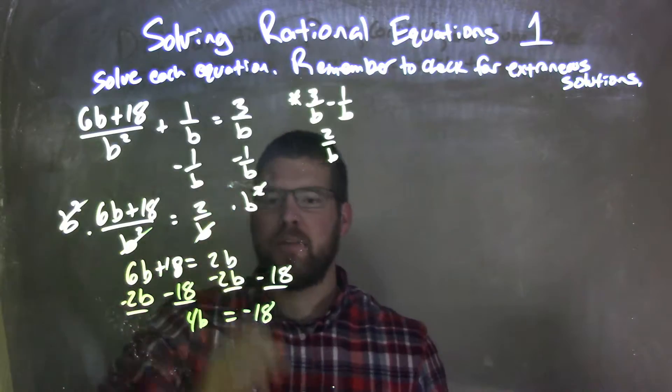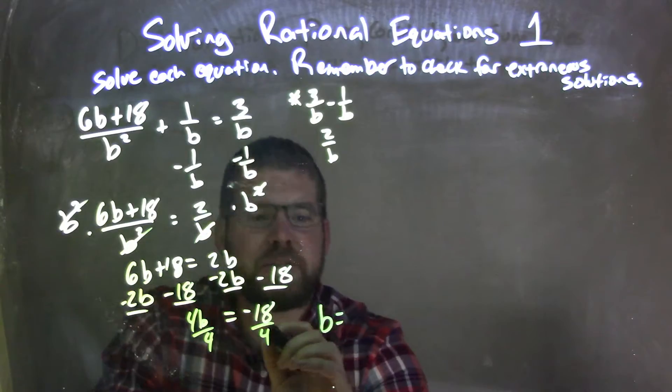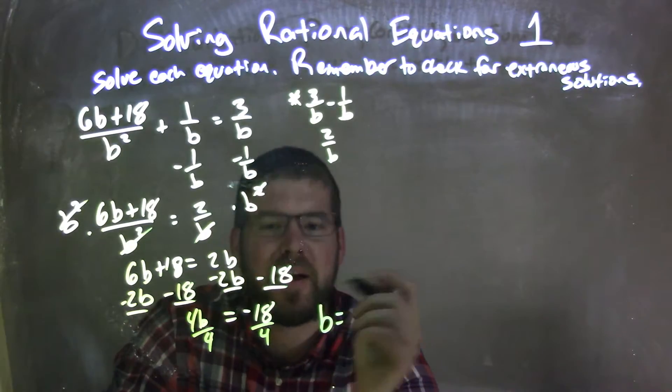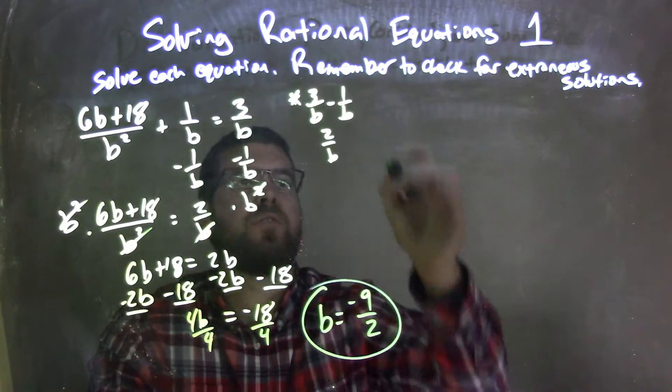Now, when I divide by 4 to both sides, I get b by itself, and that fraction simplifies. Well, negative 18 over 4, both divided by 2, is negative 9 halves, and there we go. So now I need to check that.